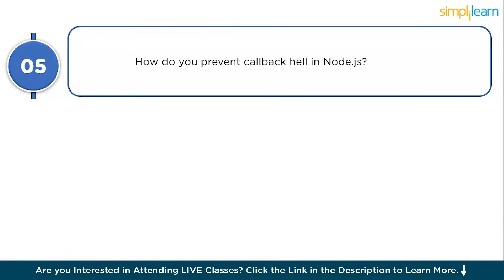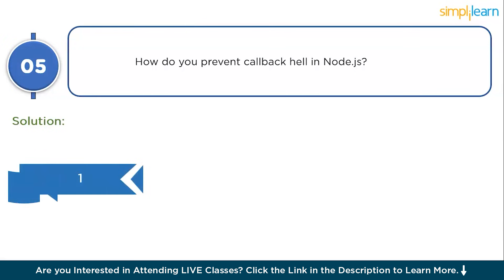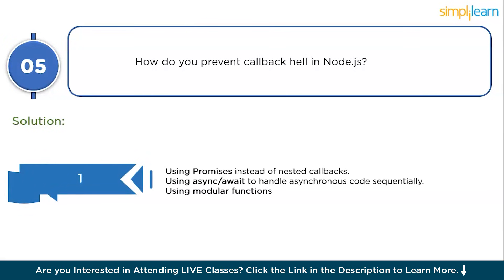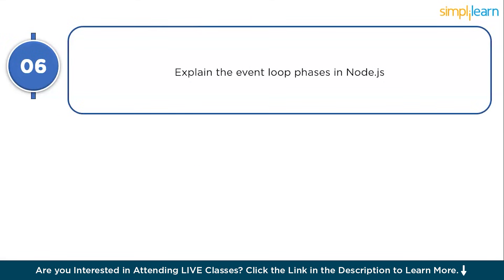Question 5: how do you prevent callback hell in Node.js? Callback hell occurs due to deeply nested callbacks. To avoid it you can use Promises, async/await, or modular functions. These solutions prevent the deeply nested callback pattern in Node.js.